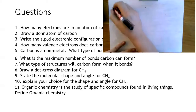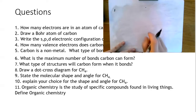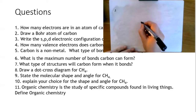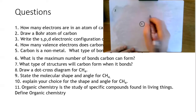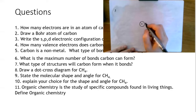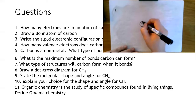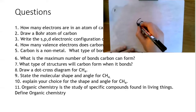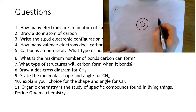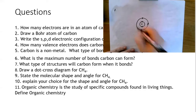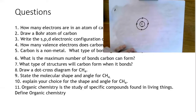Question two: draw a Bohr atom of carbon. In the nucleus is where the C is. We know we've got two electrons in the first shell or first energy level. There are six altogether, so there will be four electrons in the second shell. That's the answer to question two.